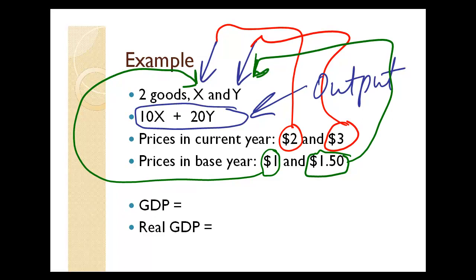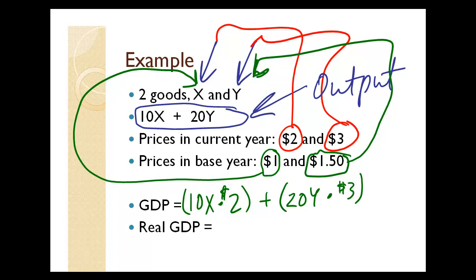Let's figure out what GDP is. To find GDP, we take our current output and multiply it by current year prices. So it's 10X times the current year price of X, which is $2.00, plus 20Y times the current price of Y, which is $3.00 per unit. So we get $20.00 plus $60.00, which is $80.00. $80.00 is our GDP in the current year.